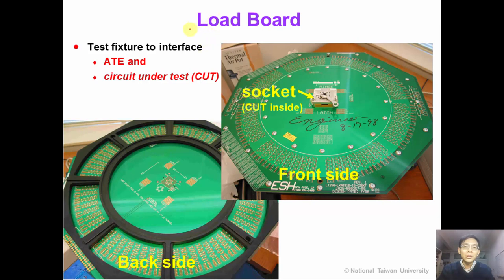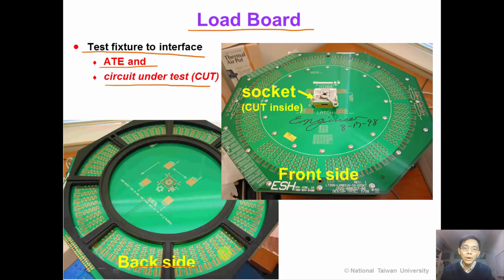This picture shows details of the load board. The load board is a test fixture to interface the automatic test equipment and the circuit under test. On the back side of the load board, we see many contact patches so that the load board can connect to the tester. On the front side, we see a socket and the CUT can be latched into this socket.